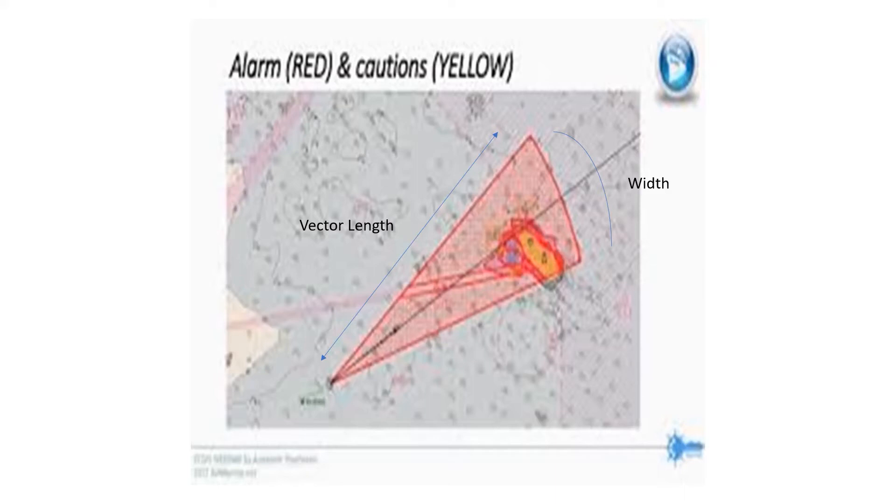If you are in open sea and you are in deep depths, you don't need to have a very long vector length or a wide width of the anti-grounding tool because the likelihood of your ship running aground in the open sea in the middle of the Pacific Ocean or Atlantic Ocean or Indian Ocean is very rare.